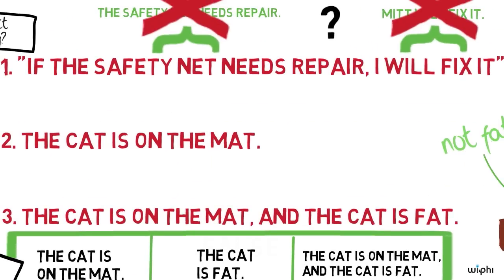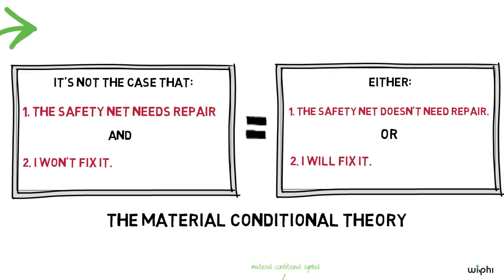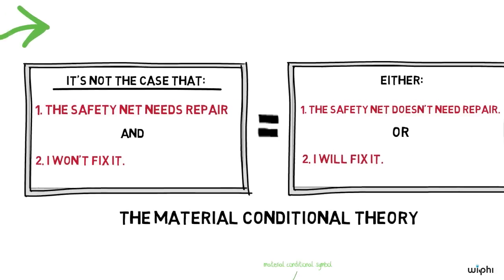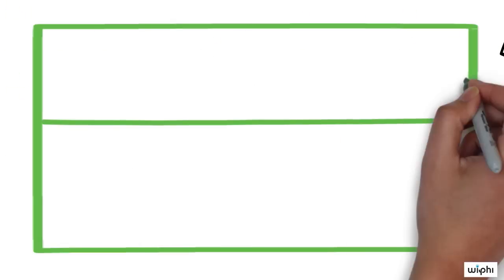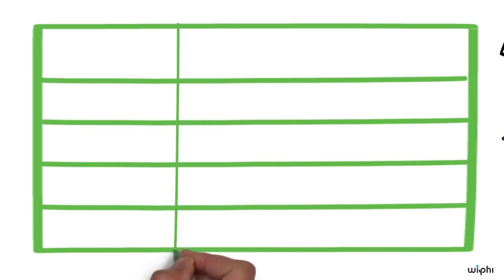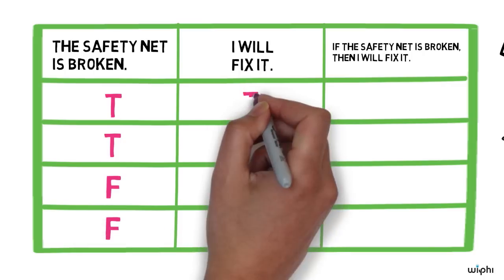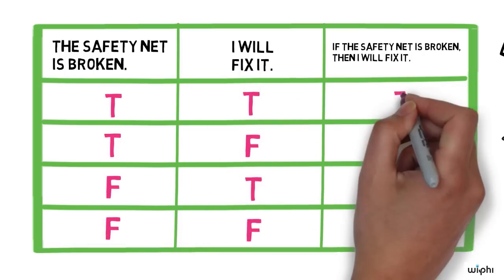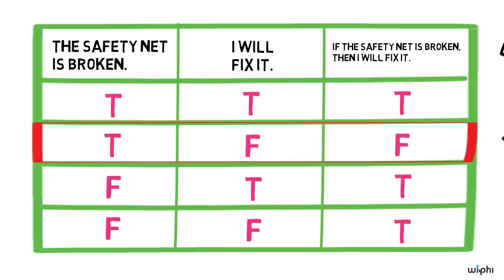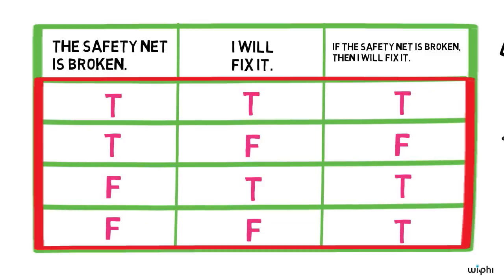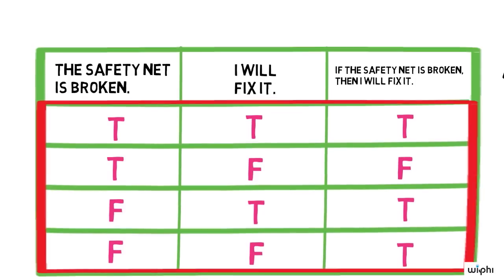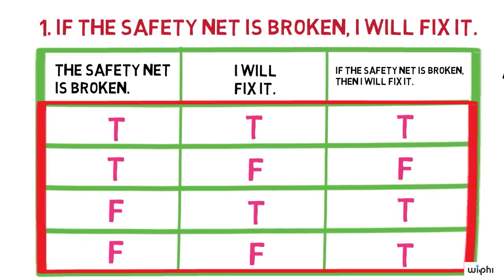So now what about our conditional sentence? According to the material conditional theory, it tells us that it is not the case that the safety net needs repair and Romney won't fix it. So in our truth table, we assign F to the conditional only on row 2, where it is true that the safety net needs repair and false that Romney will fix it. We assign T to it on all other rows. This assignment of truth values, therefore, entirely captures the meaning of the conditional according to the material conditional theory.